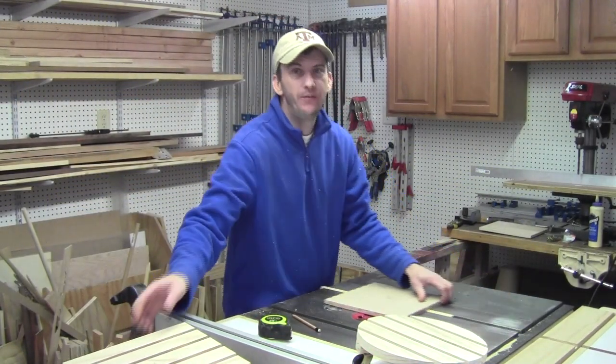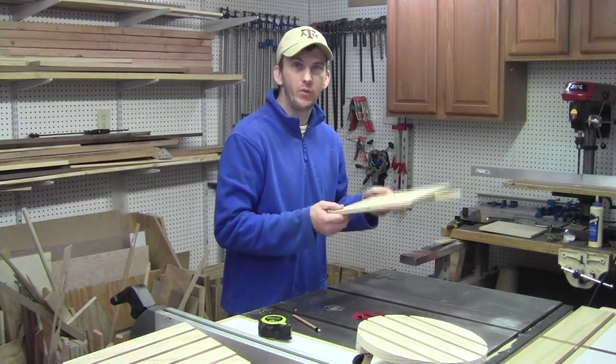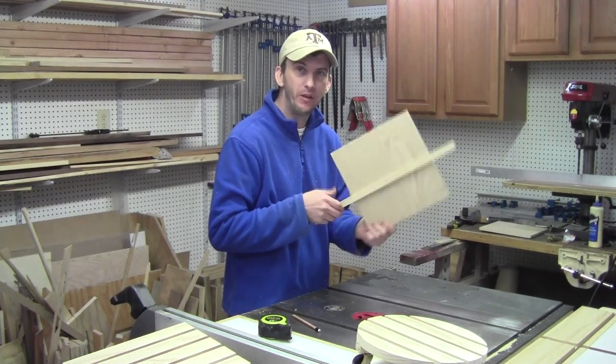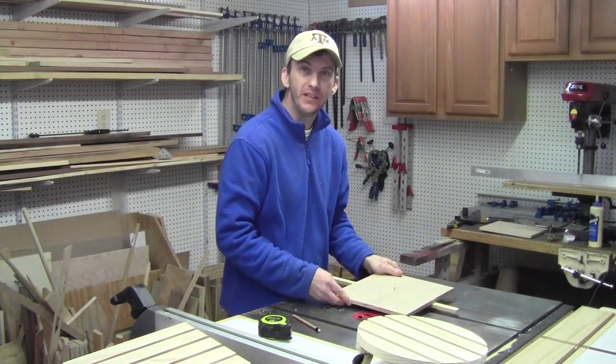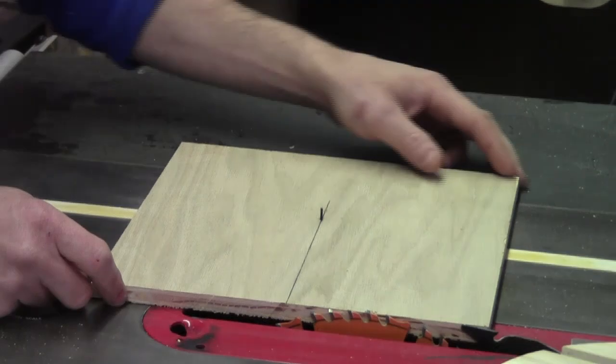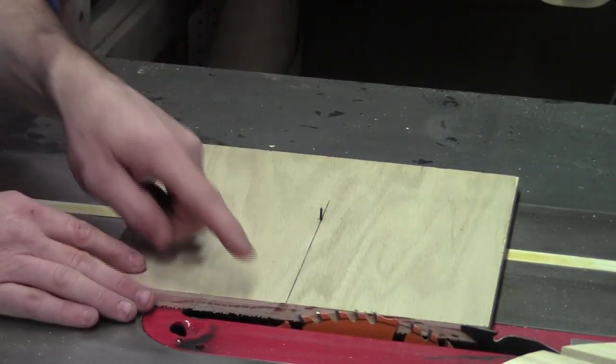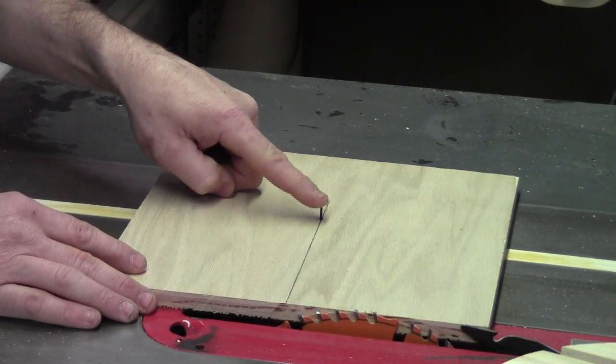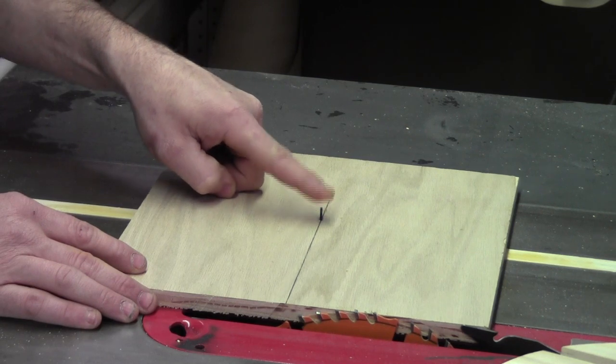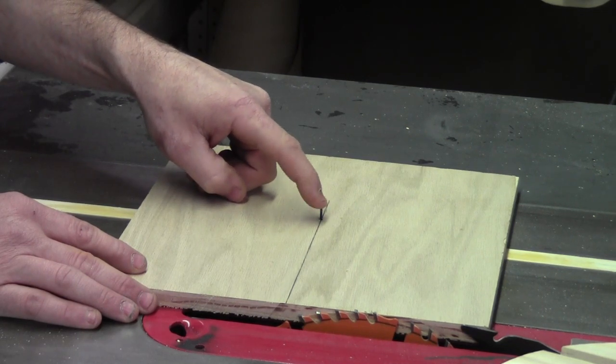Once you make your center mark, over here on the table saw, I have a very simple circle cutting jig, which is made up of a half inch piece of plywood and a three quarter inch runner that fits in my miter track. On this circle cutting jig, where the blade cuts against this edge, I have a line marked and measured over five and seven eighths of an inch and I have a little brad nail sticking in here.